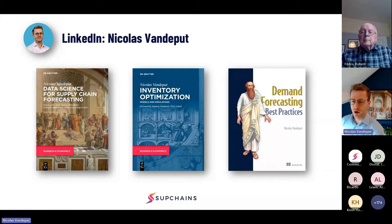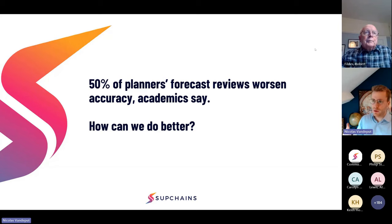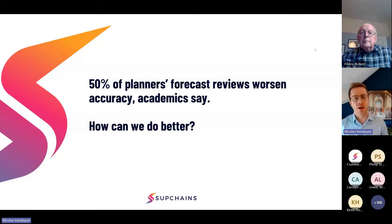I've started including this quote in most of my presentations: 50% of the time, planners tend to worsen forecast accuracy once they do a review. It means that when a demand planner receives a forecast from a software or forecast engine, 50% of the time they fail to improve it. The main question being: how can we as demand planners do better and improve beyond that 50%?